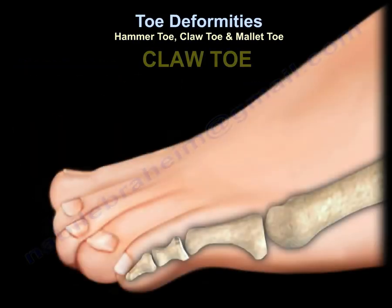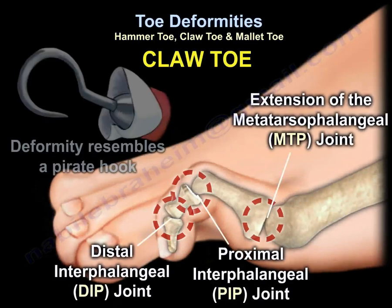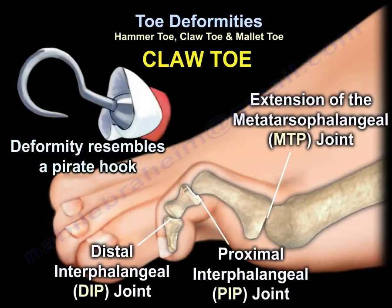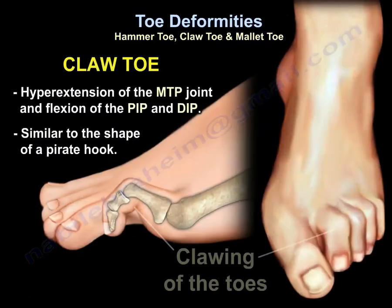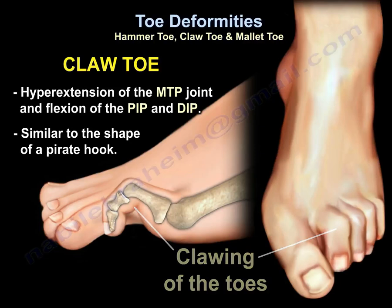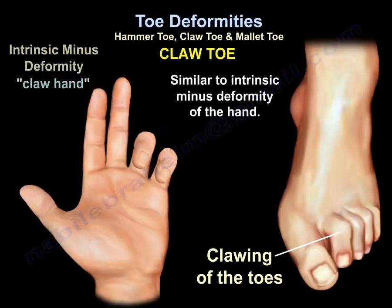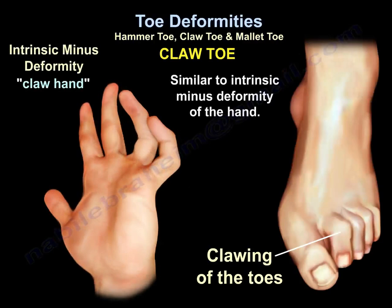How about claw toes? Claw toes resemble a pirate hook. Looking at the three joints — the metatarsophalangeal joint, the PIP joint, and the DIP joint — in claw toes there is extension of the MTP joint and flexion of both the PIP and DIP joints. Claw toes is similar to intrinsic minus deformity of the hand, also called claw hand.